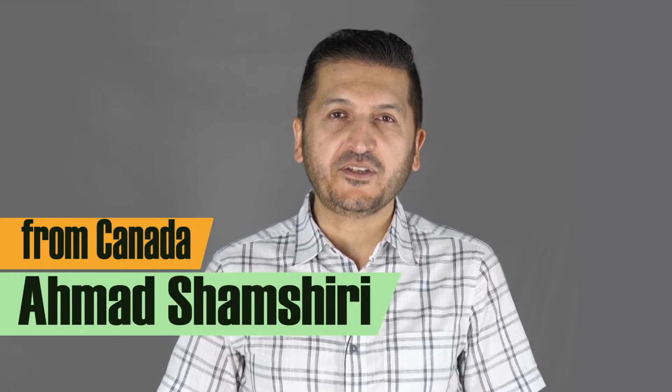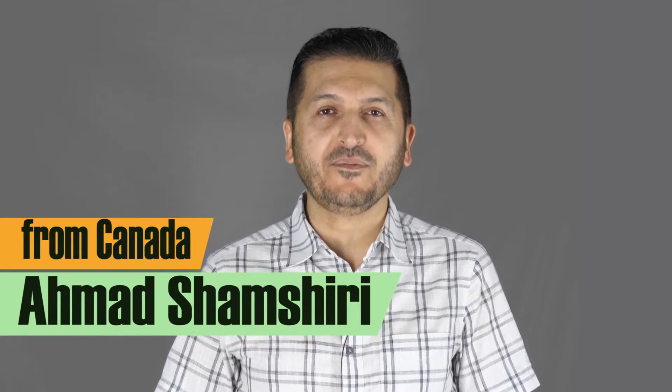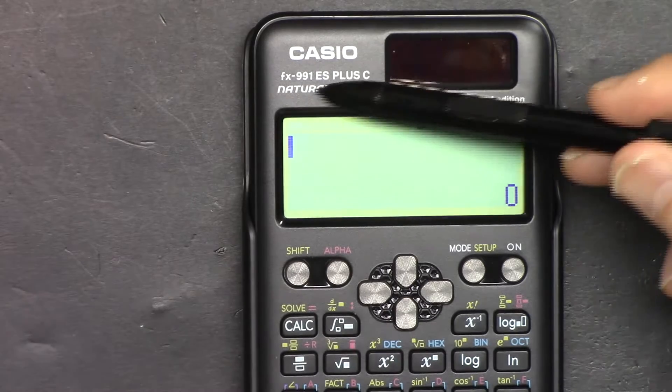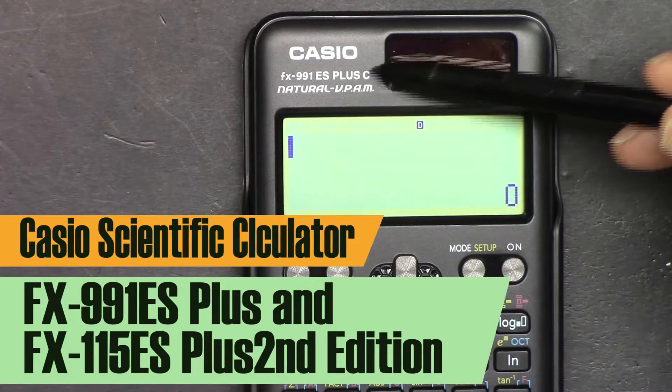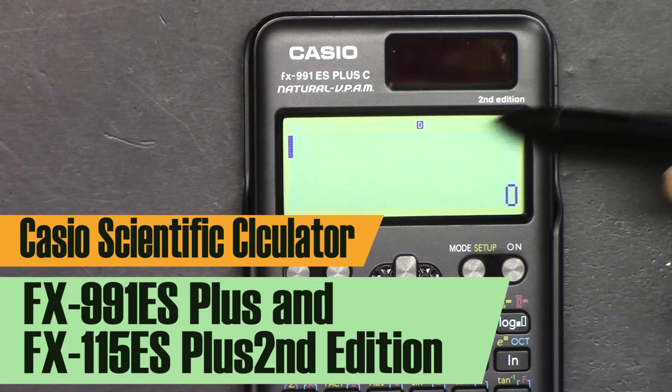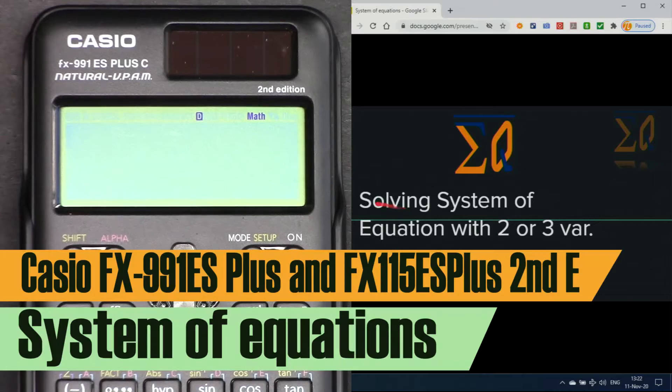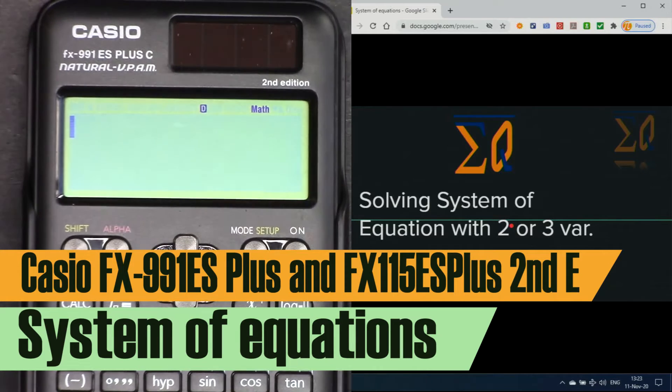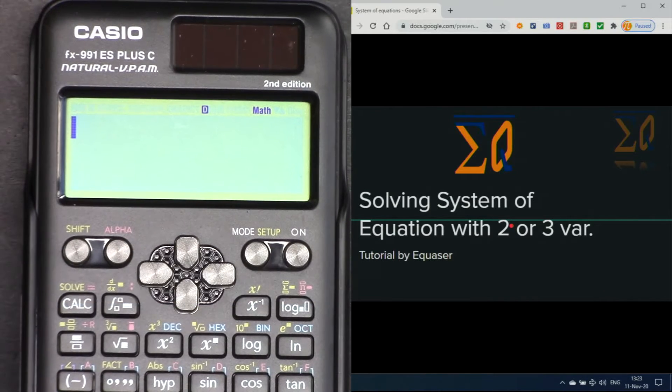Hi, welcome to a video tutorial from Equasor, my name is Ahmad Shamshiri. In this video we are going to use this Casio FX991EF plus second edition scientific calculator to solve system of equations with two and three variables. Let's get started.